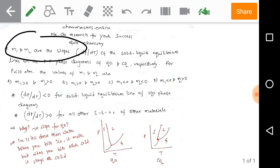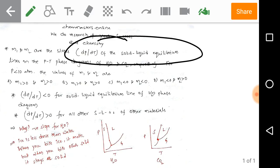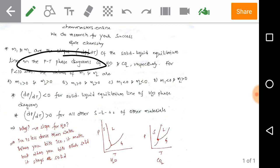M1 and M2 are the slopes dp by dt of the solid-liquid equilibrium lines in the pressure-temperature phase diagrams of water and carbon dioxide respectively. For pressure less than 10 atmosphere, the values of M1 and M2 we need to find.